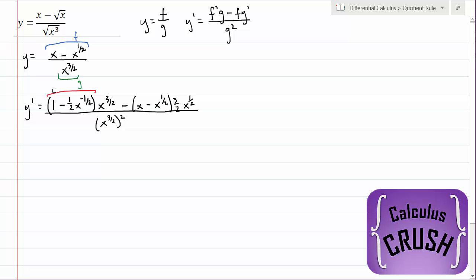And that is all divided by x to the 3 halves squared. Just to point it out, this is our f prime. This is g. This is f. And this is g prime.